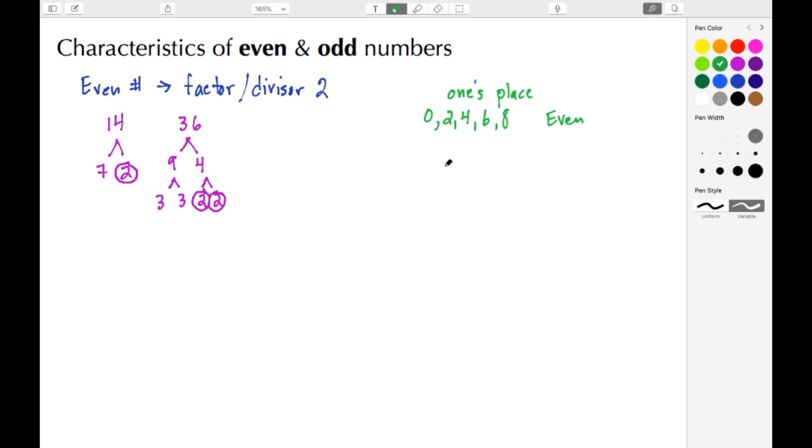Some examples here would be, for example, 100. There's a 0 in the ones place. If we were to do the factoring we have 10 times 10, which is 5 times 2 and again another 5 times 2. And again we see that we have a factor of 2.